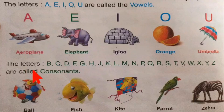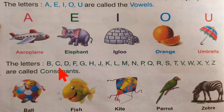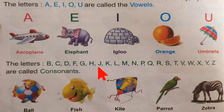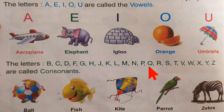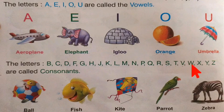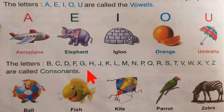Next one: the letters B, C, D, F, G, H, J, K, L, M, N, P, Q, R, S, T, V, W, X, Y, Z are called consonants.